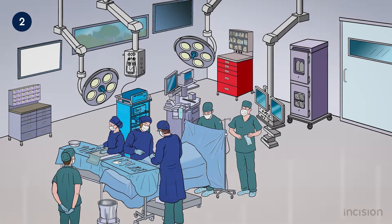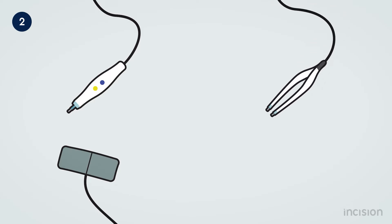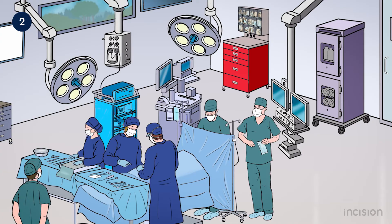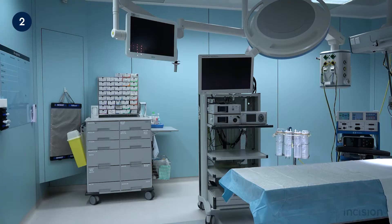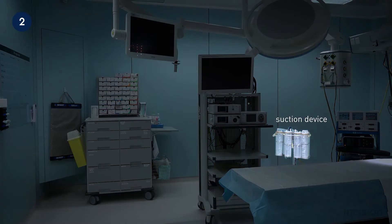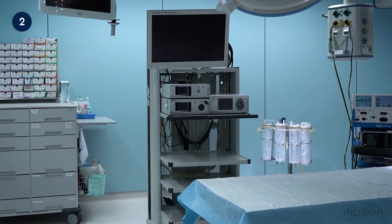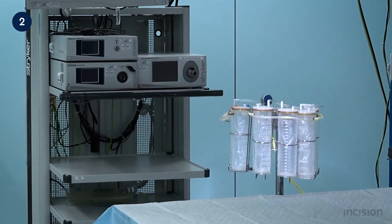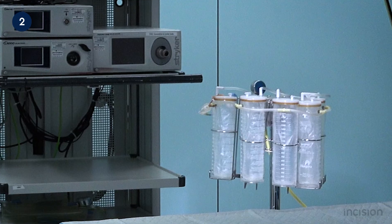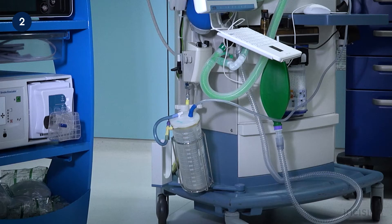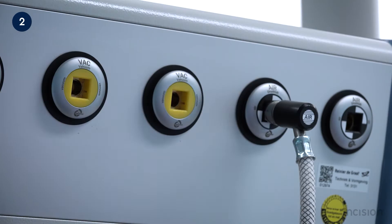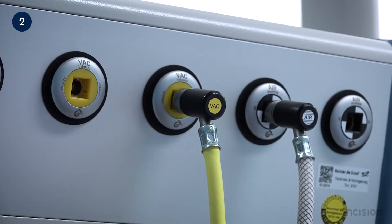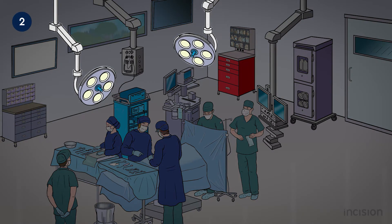The anesthesia machine should ideally be located close to the door, allowing quick access for the anesthesiologist in case of an emergency. Electrosurgery is integrated into modern surgery and part of most procedures; the electrosurgical unit is therefore a standard component of the operating room. A suction device is also a standard component of each operating room. Both the surgical team and the anesthetic team use the suction device during surgery.